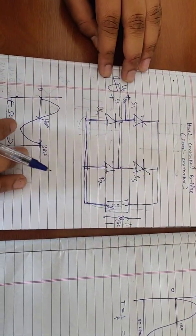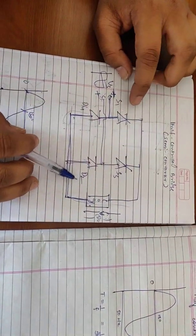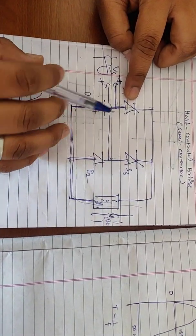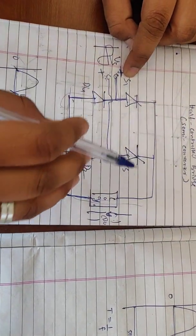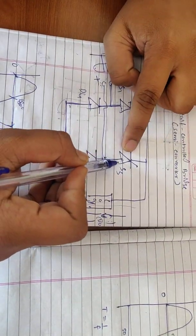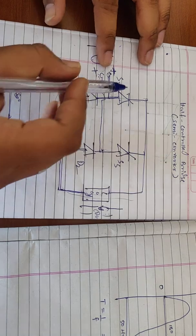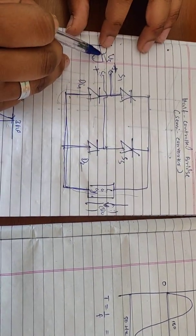First of all we are going to supply this with a sine wave and the connections are such that SCR S1 is connected across the load and so as SCR2, this forms a circuit.